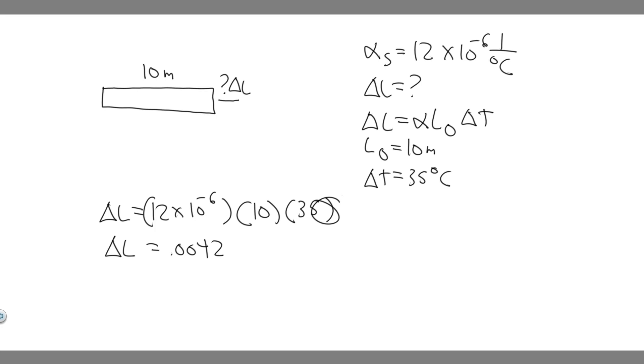Keep in mind the units. This is in degrees Celsius. This unit right here was inverse degrees Celsius so these cancel, and then this is in meters so your change in length is just meters. So basically we know the expansion gap is just going to have to equal the change in length, which is 0.0042 meters.